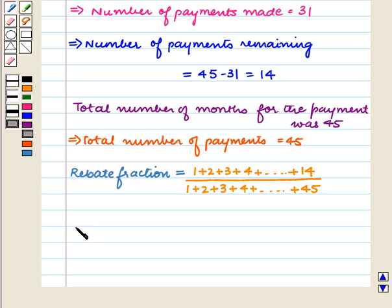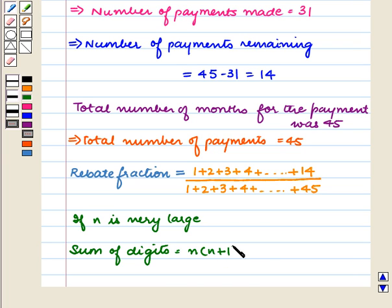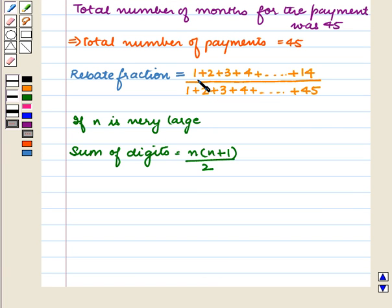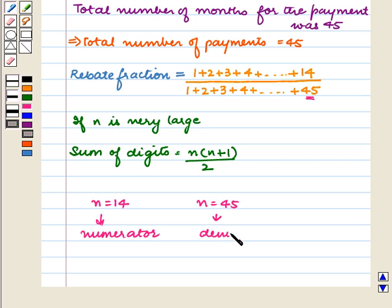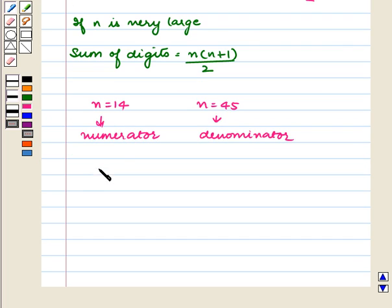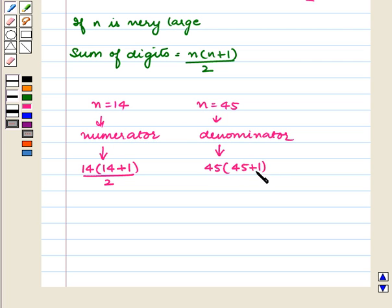Now we know that if n is large, the sum of digits is equal to n times (n plus 1) upon 2. So here in the numerator n is equal to 14, and the sum of digits in the denominator will be equal to 45 times (45 plus 1) upon 2.